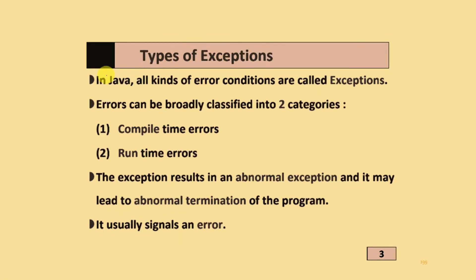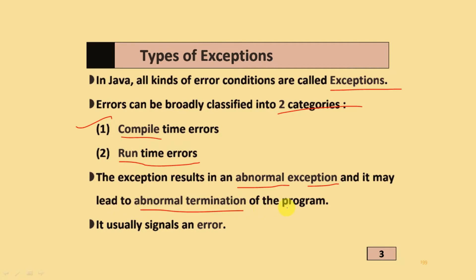The types of exceptions: in Java, all kinds of error conditions are called exceptions. Errors can be broadly classified into two categories. The first one is compile-time errors, and the second one is runtime errors. An exception results in an abnormal termination of the program and usually signals an error.